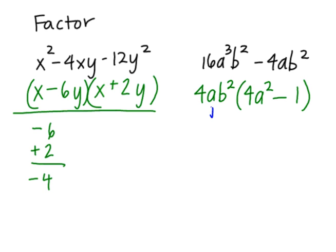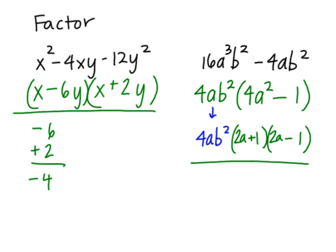But from the second part I noticed that 4 is a square, a² is a square, and 1 is a square. So I can open this up as the difference of squares, and this would be 2a and 2a on the front and 1 and 1 on the back. One's positive and one's negative, and that's how that one would factor.